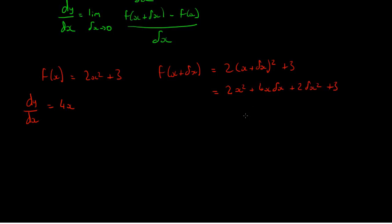So, if we write this out in this format here, we can say that dy by dx, limit, delta x tends to 0, of f of x. Now, f of x is 2x squared plus 3.